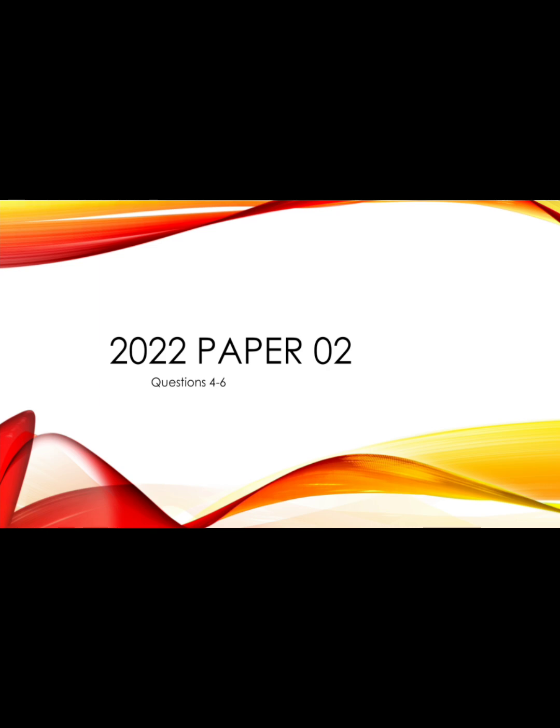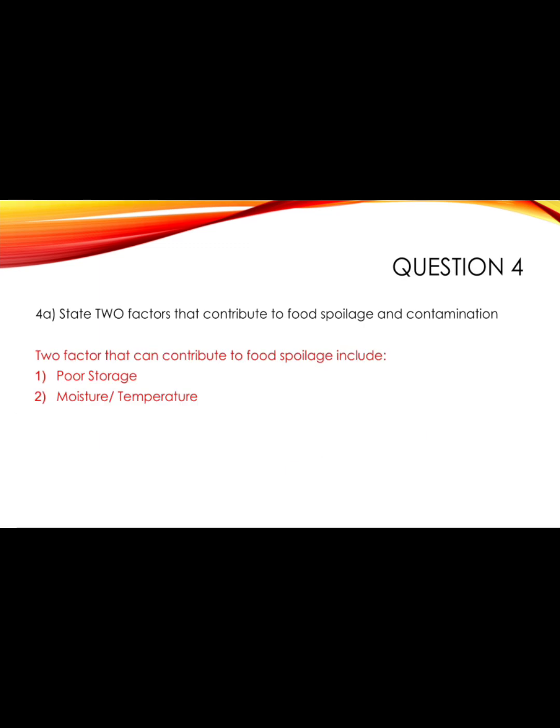Having discussed the first three questions for the 2022 past paper, we're going to now move on to questions four through to six. So question four says: state two factors that contribute to food spoilage and contamination.